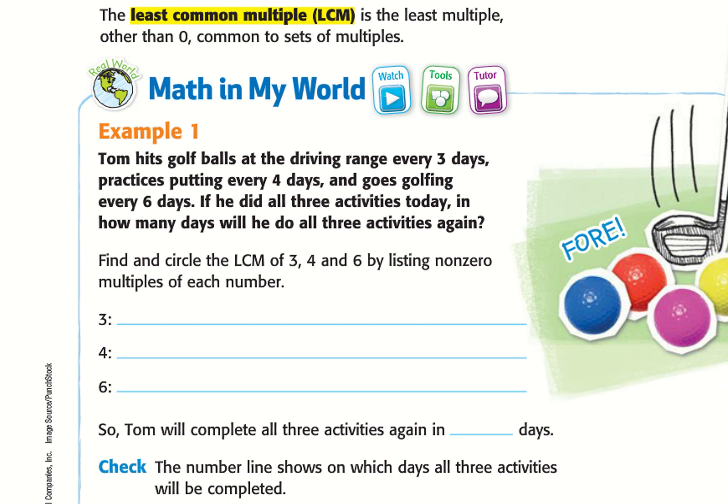So this is Tom hits golf balls at the driving range every three days, practices putting every four days, and goes golfing every six days. If he did all three activities today, in how many days would he do all three activities again? So find the least common multiple.